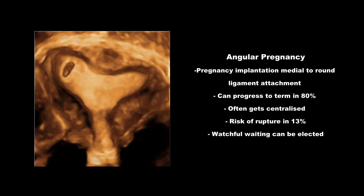Briefly reviewing the literature on angular pregnancy: implantation medial to the round ligament attachment at the lateral angle of the endometrial cavity results in angular pregnancy. It can progress to term in about 80% of cases because it is technically within the endometrial cavity, and the gestational sac often centralizes into the uterine cavity as gestational age advances.